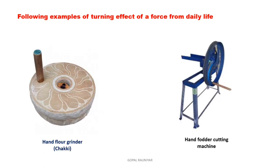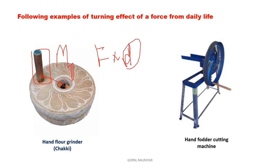Now, examples of turning effect of force from daily life. The first example is a hand flour grinder — a chakki — commonly used in villages for grinding flour. The upper circular stone is provided with a wooden handle near its edge. Because the handle is at the edge, the distance is maximum. If it were near the center, we would have to apply maximum force. Using the formula Moment = F × d, more distance means more moment, so placing the handle at the edge reduces the effort required to turn the wheel.